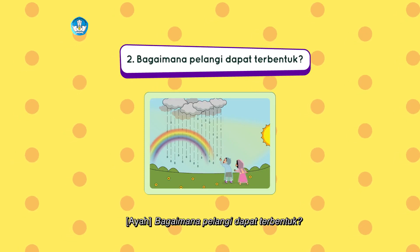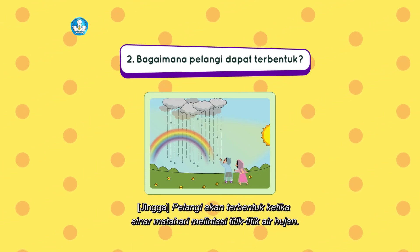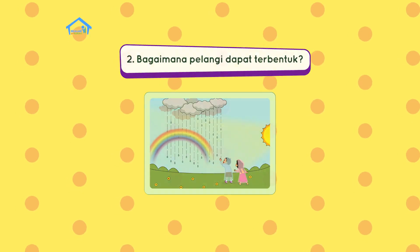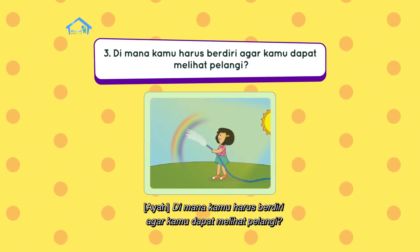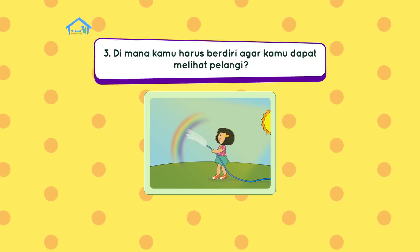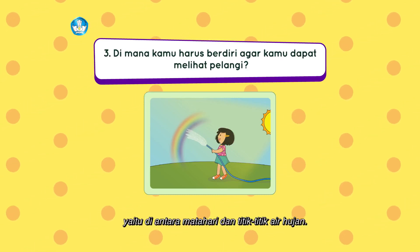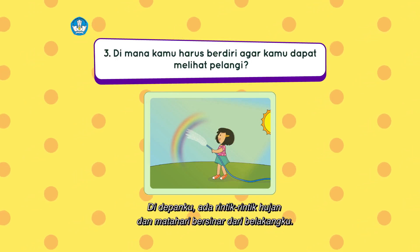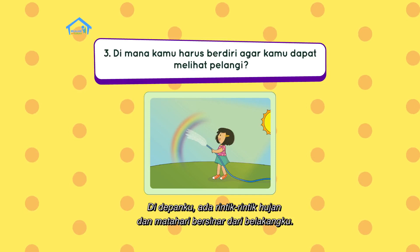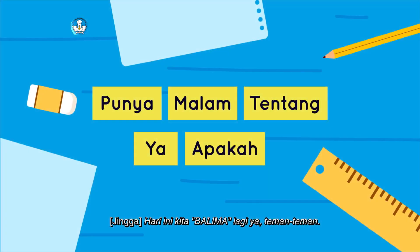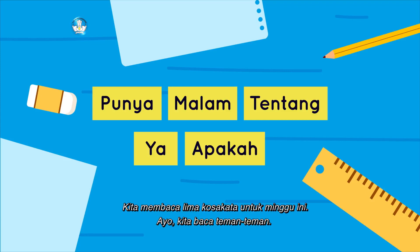Bagaimana pelangi dapat terbentuk? Pelangi akan terbentuk ketika sinar matahari melintasi titik-titik air hujan. Di mana kamu harus berdiri agar kamu dapat melihat pelangi? Aku harus berdiri pada posisi yang tepat, yaitu di antara matahari dan titik-titik air hujan. Di depanku ada rintik-rintik hujan dan matahari bersinar dari belakangku. Hebat! Hari ini kita baca lima kosa kata untuk minggu ini, ayo kita baca teman-teman.